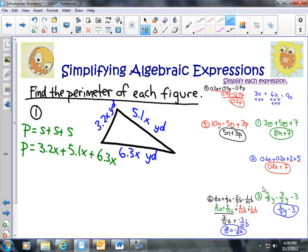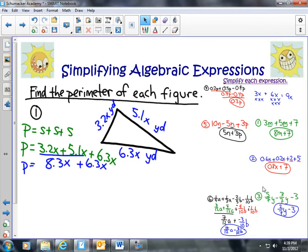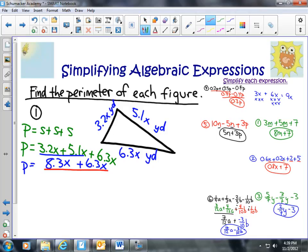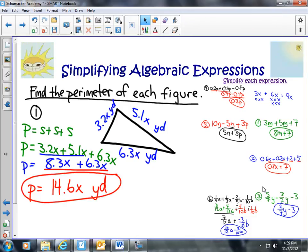So, again, to help me avoid not making errors, I'm going to do them two at a time. You can go all the way across if you like. I want to be confident in my answer. So, 3.2 plus 5.1 is going to give me 8.3x plus 6.3x. And then I'm going to have, I'm going to add these together. And I'm going to have 8.3 plus 6.3 is going to get me 14.6x. And I've got to make sure I label it yards because we're looking at perimeter. That is the solution.